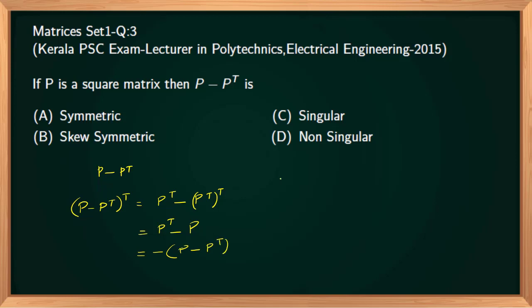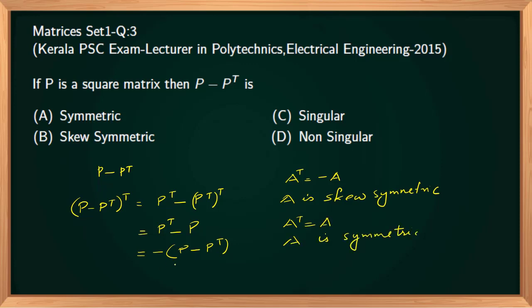For a matrix A, if A transpose equals minus A, then A is a skew-symmetric matrix. If A transpose equals A, then A is symmetric. In this case, since (P minus P transpose) transpose equals minus (P minus P transpose), P minus P transpose is a skew-symmetric matrix. So the correct option is option B.